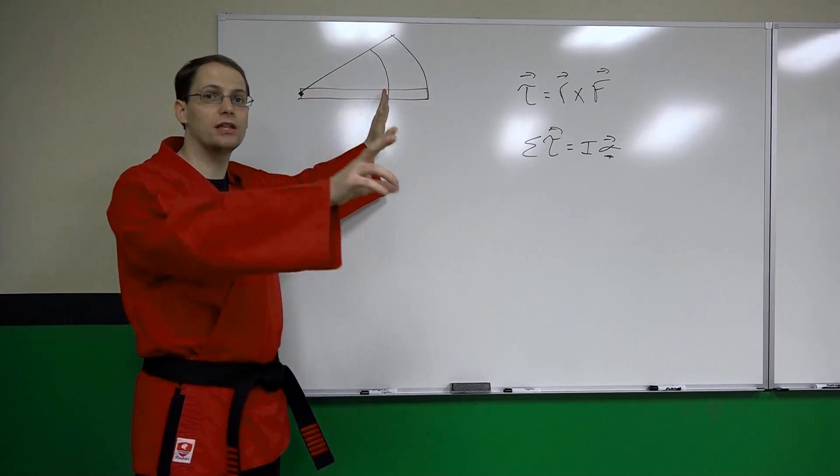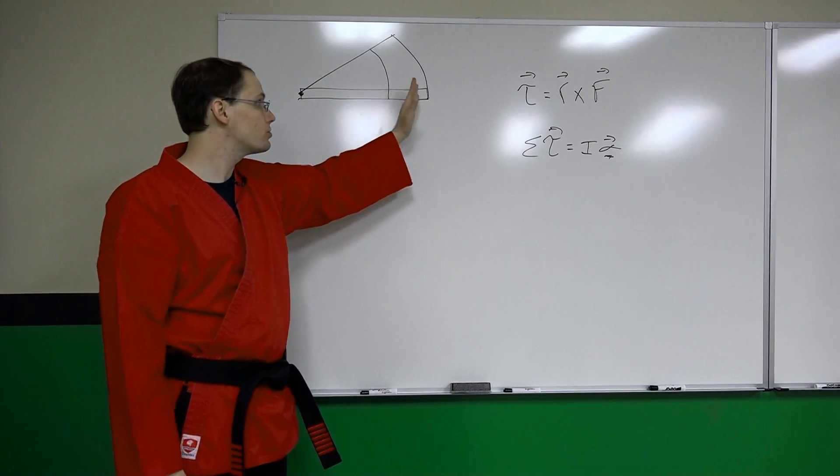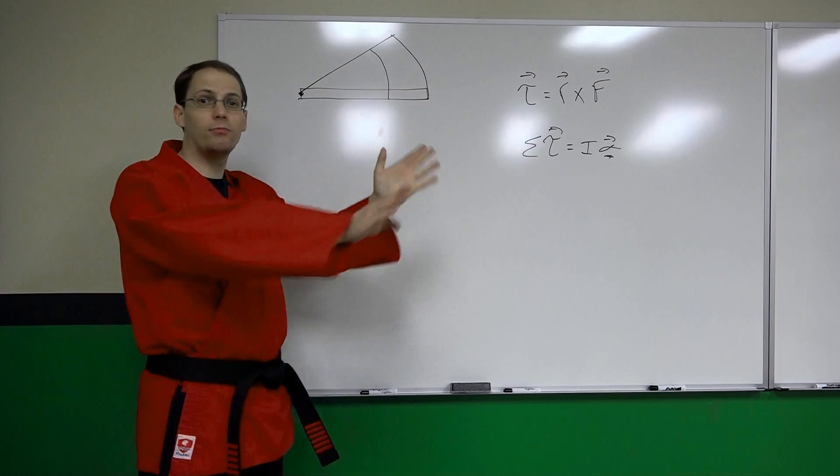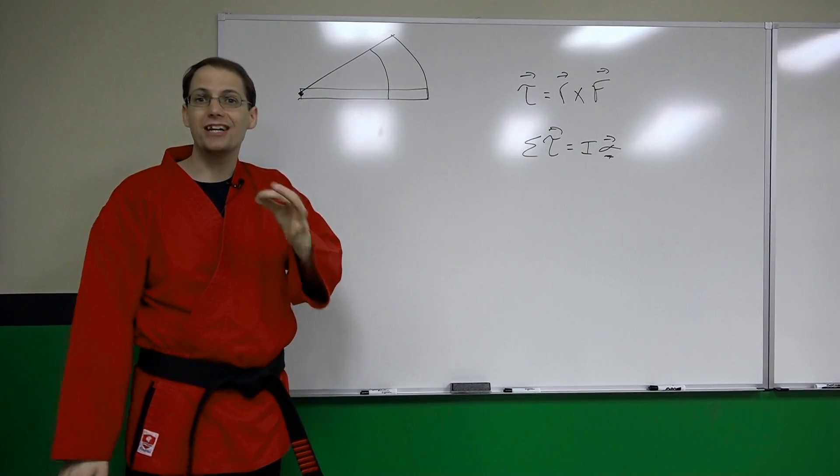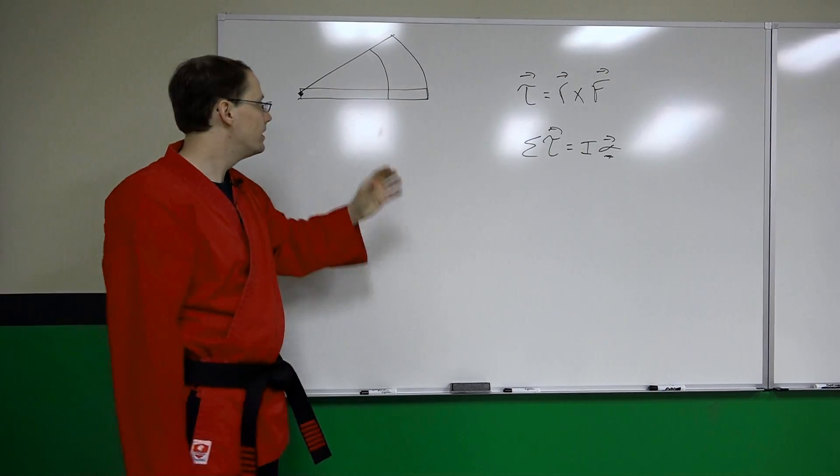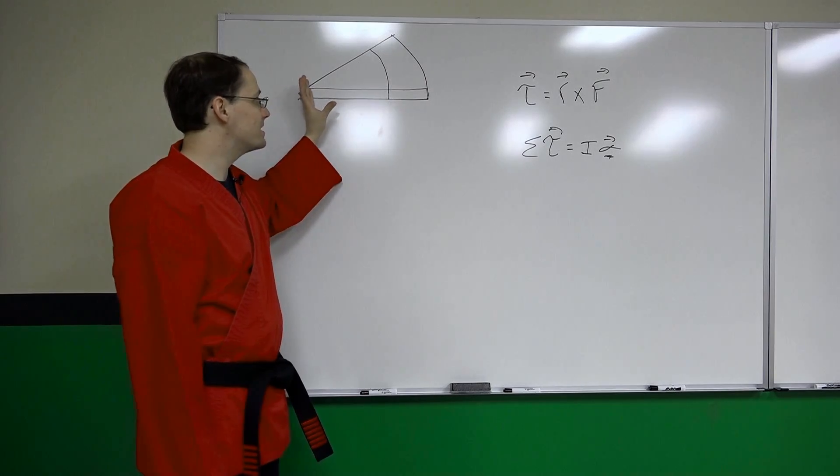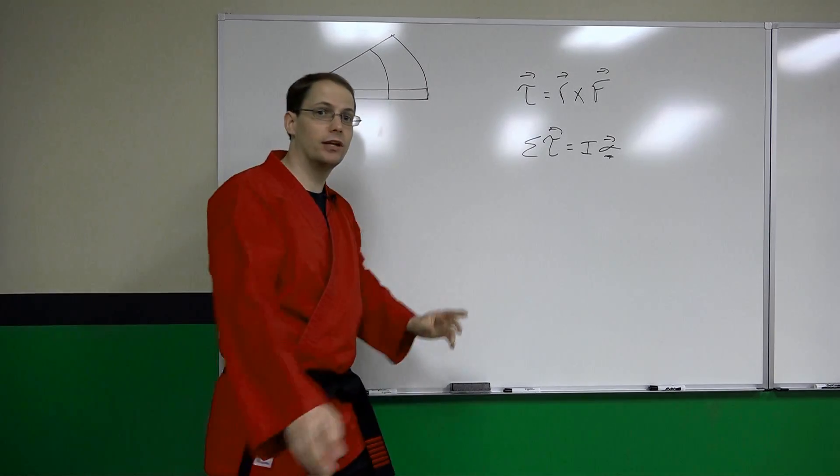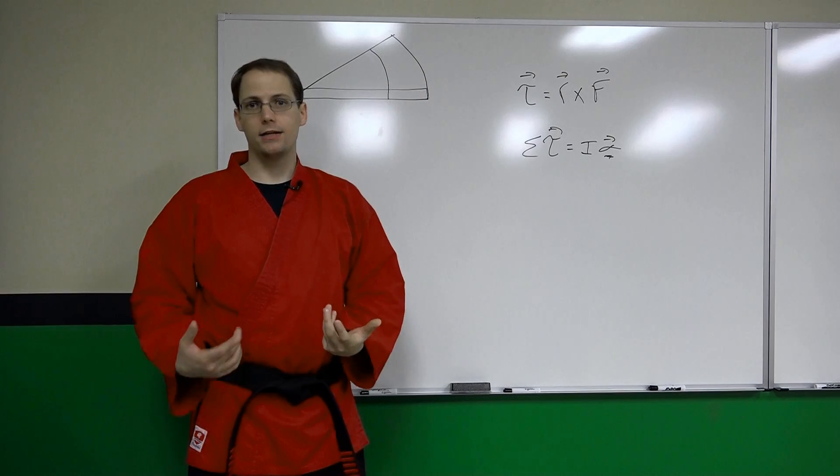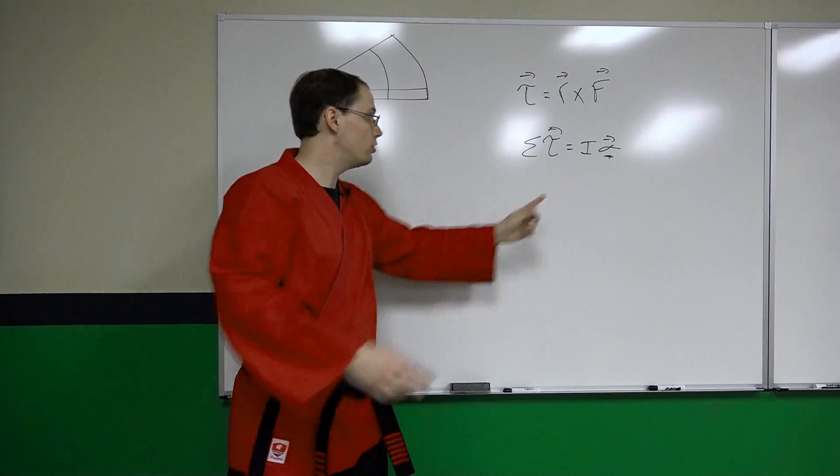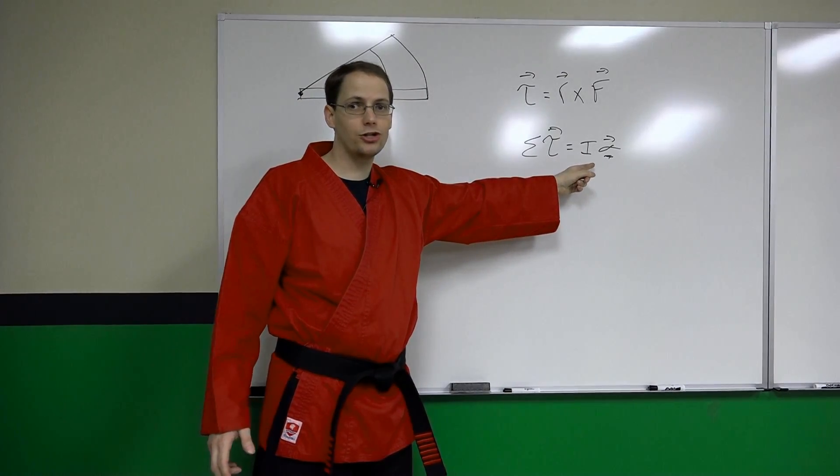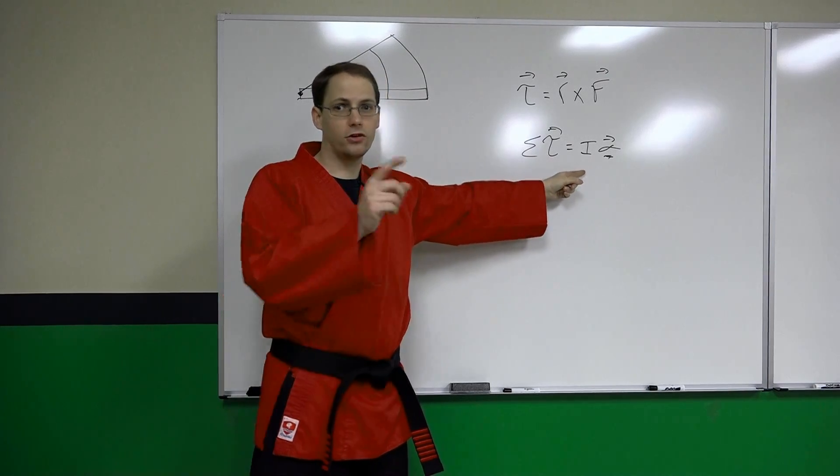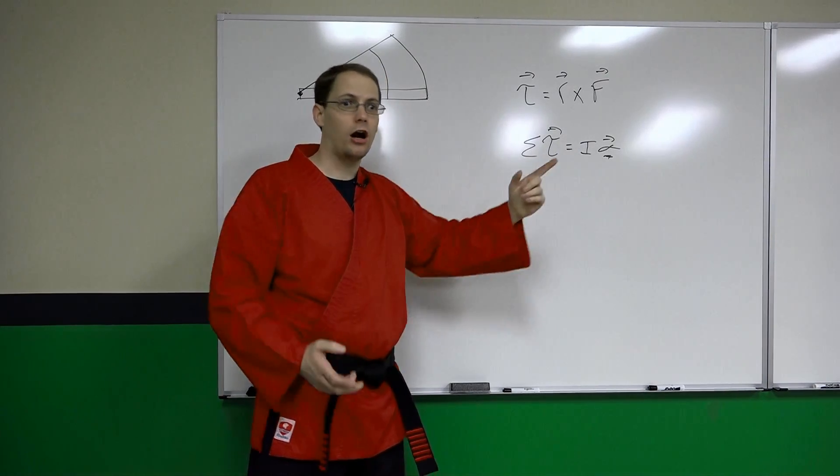Even when we use the edge of our hand, we're not just striking with the hand. The mass that's behind that should be the mass not only from your whole arm, but we also have some rotational inertia. Remember what that is? If we can increase our inertia, it's going to become much more difficult for our opponent to bring our strikes to rest.